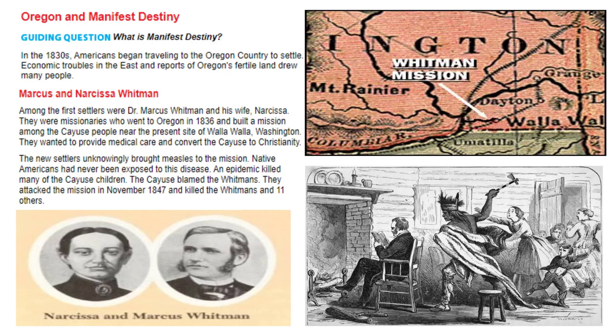Question ten: what factors led to American settlers wanting to move to the Oregon country in the 1830s? There was a push factor and a pull factor. The push factor was the economic panic of 1837 on the east coast, which led people to think about moving west. The pull factor was that Oregon was known to have fertile land great for farming. Question eleven: why did the Whitmans travel to Oregon country in 1836? They wanted to set up a mission and convert the Cayuse people to Christianity. Question twelve: why did the Cayuse kill the Whitmans? The Native Americans had no resistance to measles; when the Whitmans accidentally brought it, many Cayuse died, and they blamed the Whitmans and killed them and 11 others.